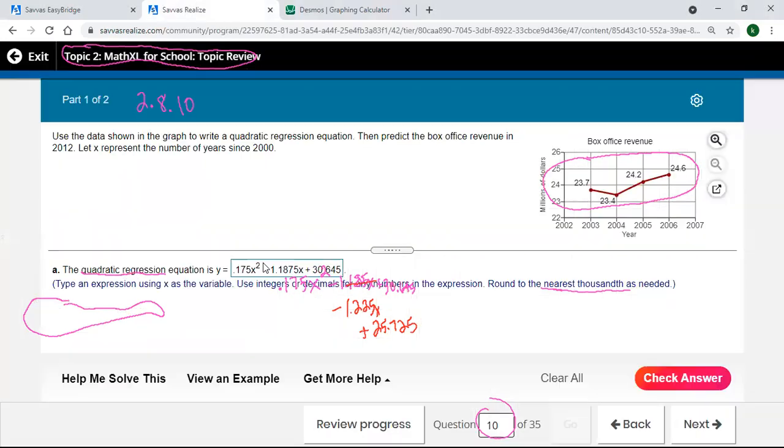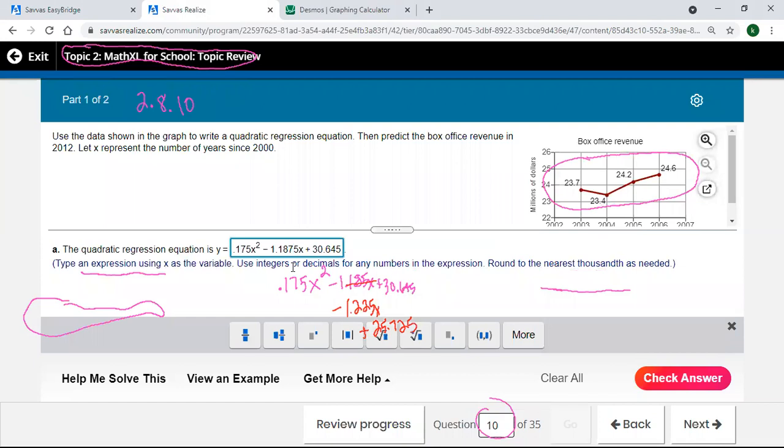All right, let's change that and see if Savvas likes that. All right, 0.175 minus 1.225 x, and then let's get this c value at the very end, 25.725.